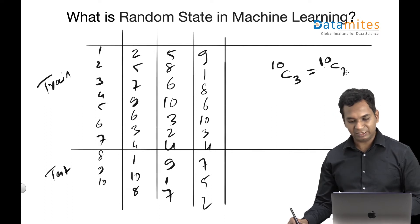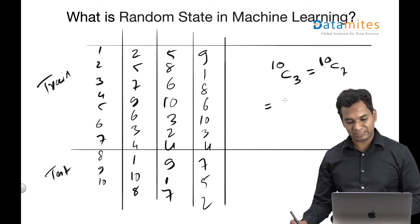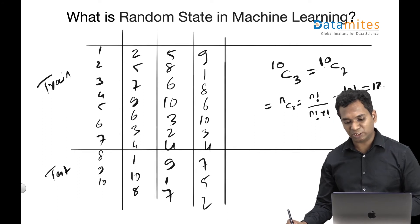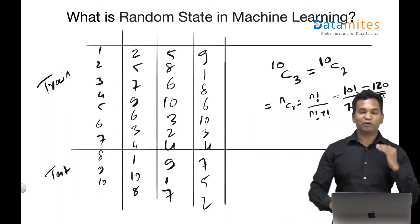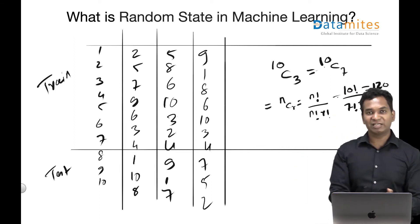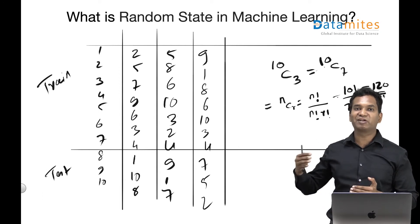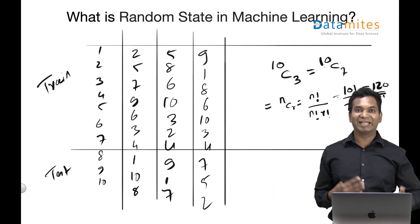If you remember the formula for combination, which is nCr, which is nothing but n factorial divided by r factorial times (n-r) factorial. In this case it is 10 factorial divided by 7 factorial times 3 factorial. If you do the math, you get actually 120. So if you randomly shuffle these 10 records, there are 120 different states possible. There are 120 different ways you can actually rearrange this data into 7 and 3 records.